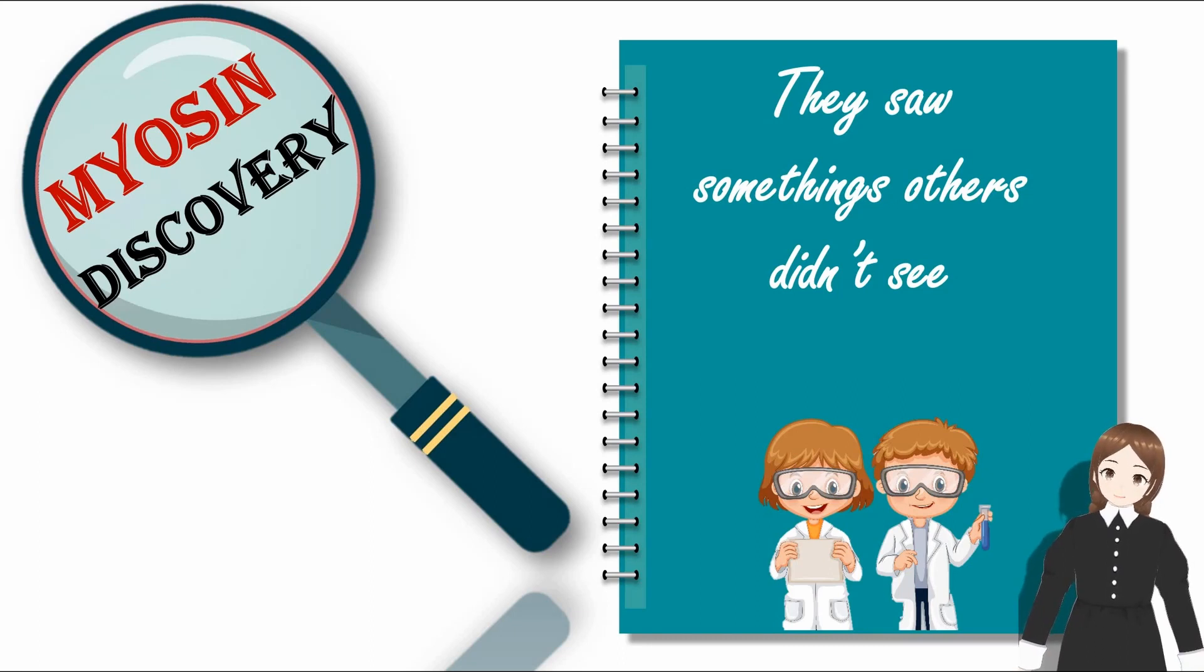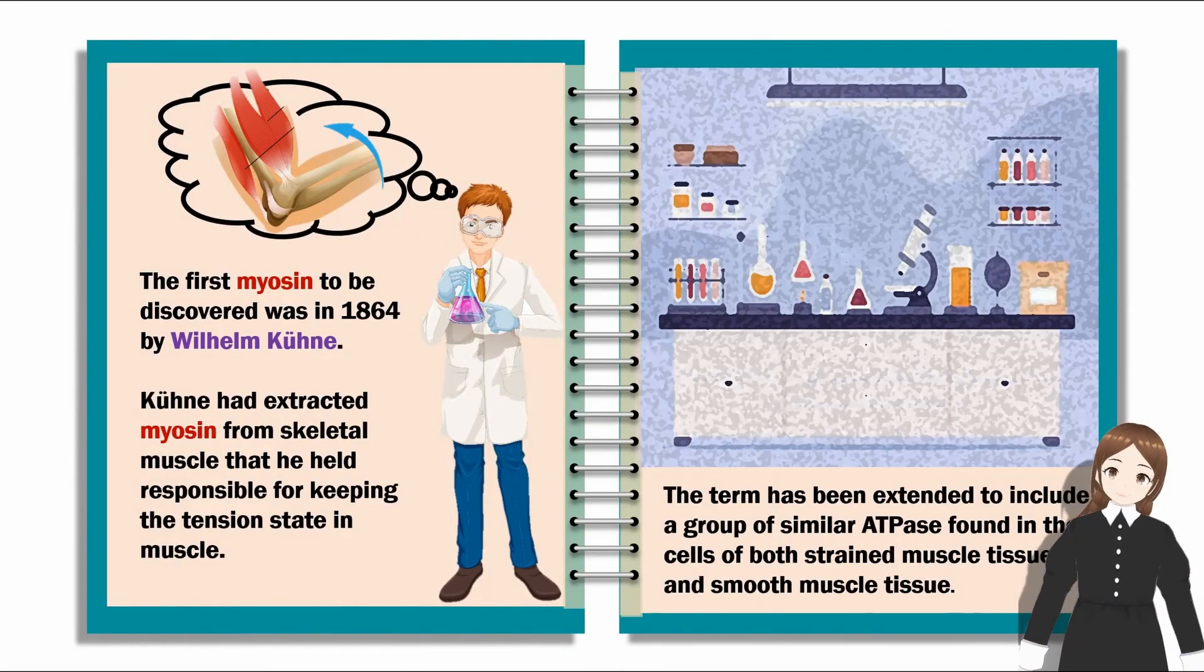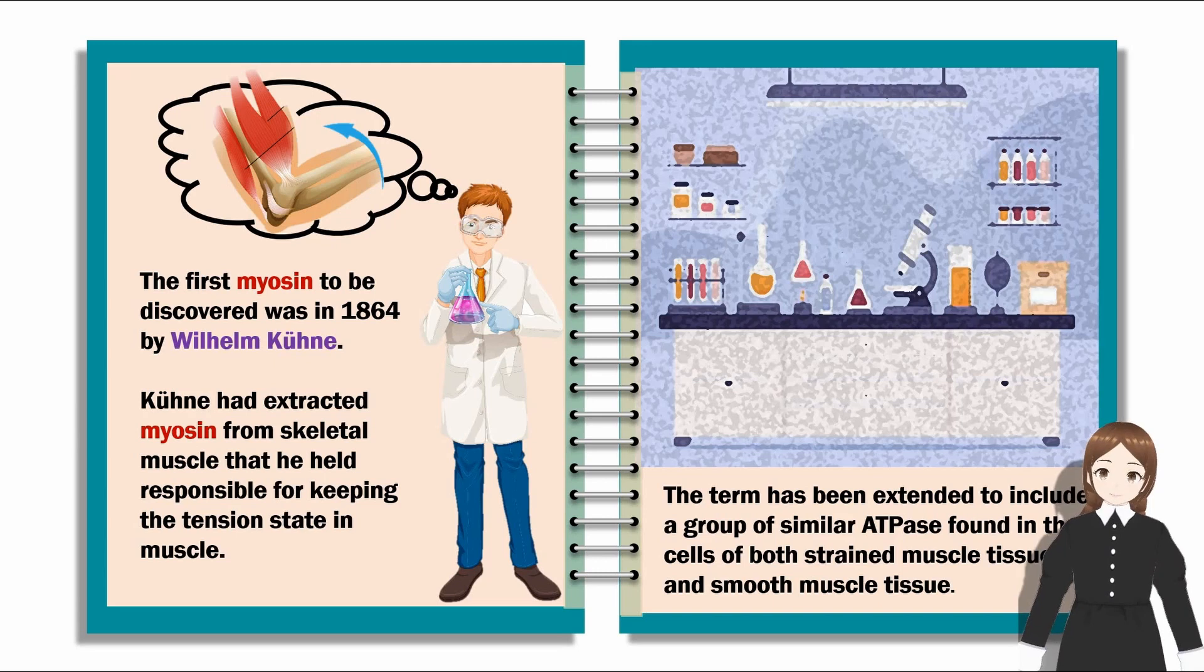For myosin discovery, they saw something others didn't see. The first myosin to be discovered was in 1864 by Wilhelm Kuhne. Kuhne had extracted myosin from skeletal muscle that he held responsible for keeping the tension state in muscle.